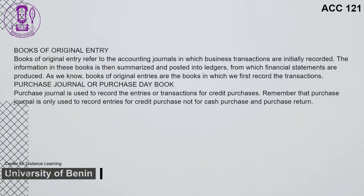Books of Original Entry refer to the accounting journals in which business transactions are initially recorded. The information in these books is then summarized and posted into ledgers, from which financial statements are produced. Books of original entries are the books in which we first record the transactions. A purchase journal is used to record entries or transactions for credit purchases only — not for cash purchases or purchase returns.